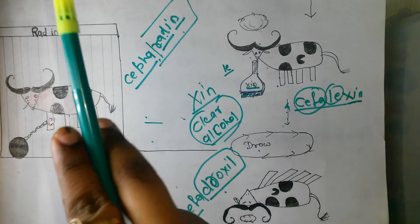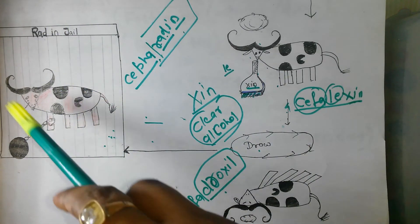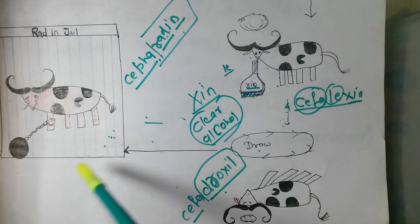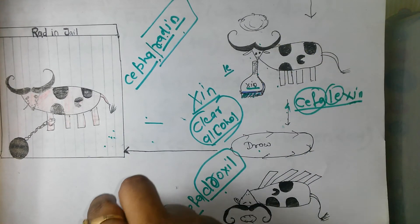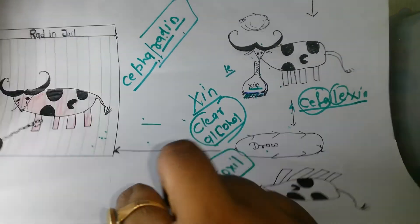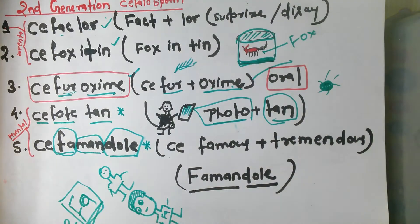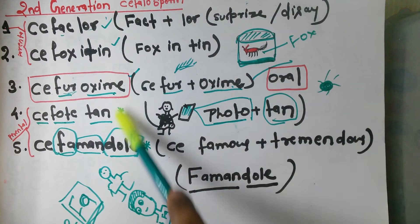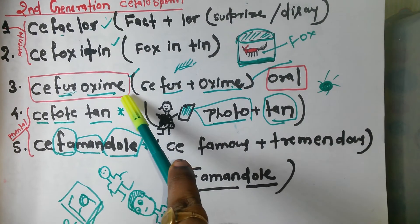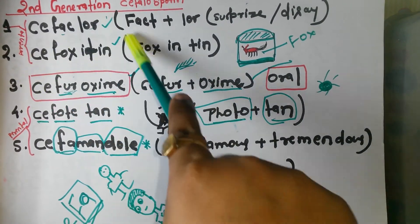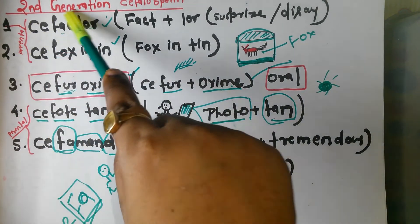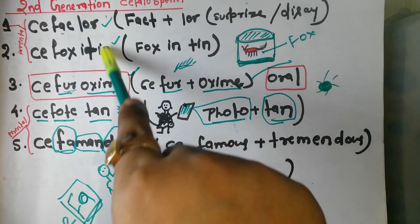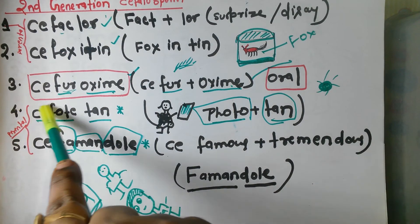So those are all six drugs of first generation cephalosporins. To summarize the routes: Cefazolin, Cephalothin, and Cephaloridine are parenteral; Cephalexin and Cefadroxil are oral only; and Cefradine is both oral and parenteral. Now, next generation — second generation drugs.